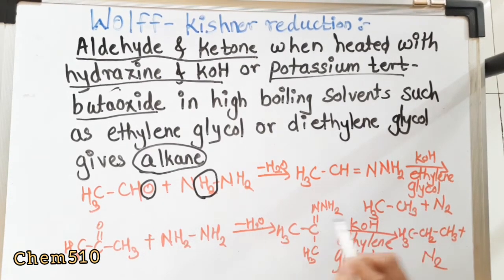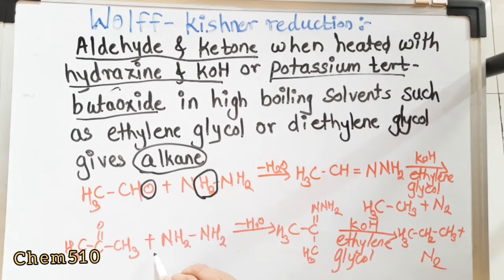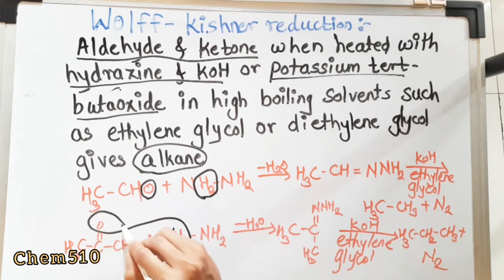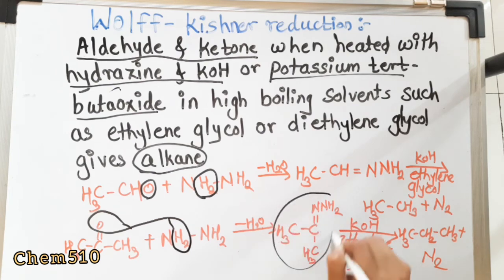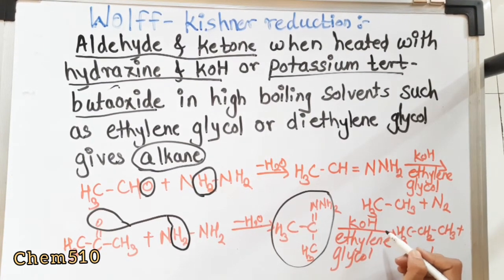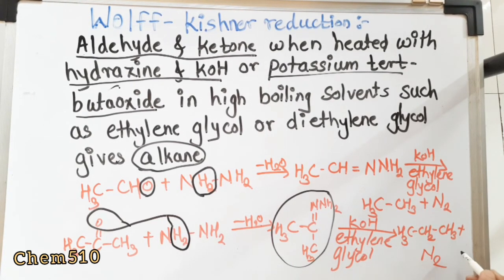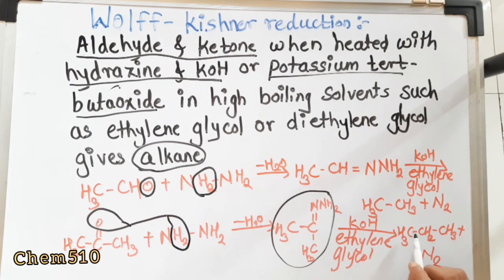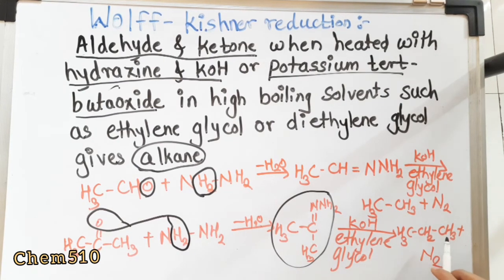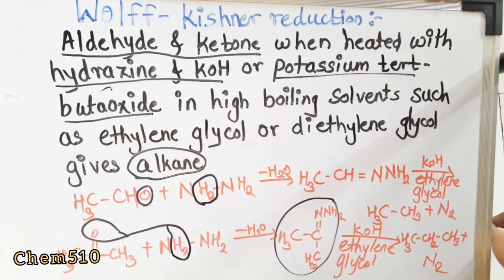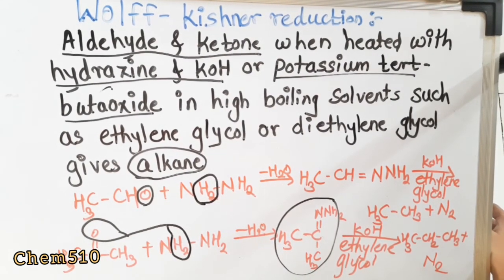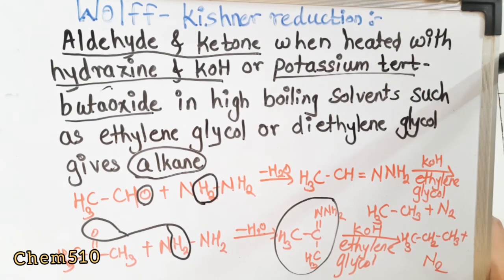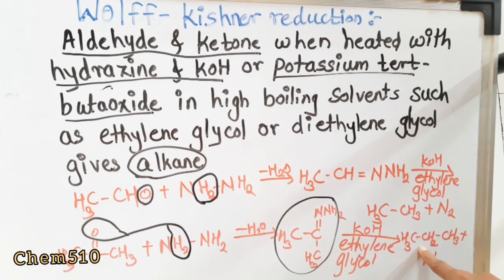So acetaldehyde is converted into an alkane. The second example: acetone reacts with hydrazine, H₂O is removed, and the adduct reacts with KOH and ethylene glycol, then propane is formed and N₂ is evolved. So here the ketone is also converted into propane — the difference between the two reactions is only the catalyst used.